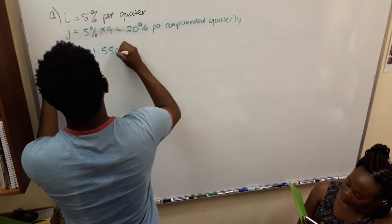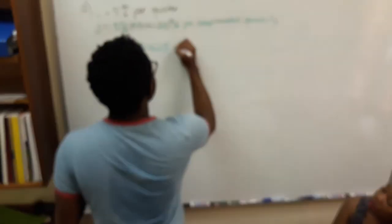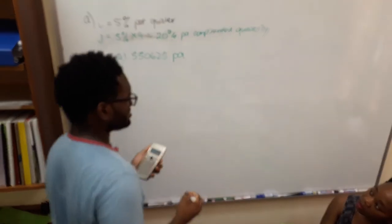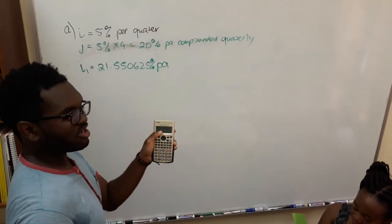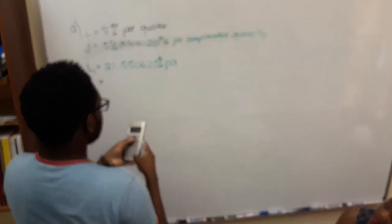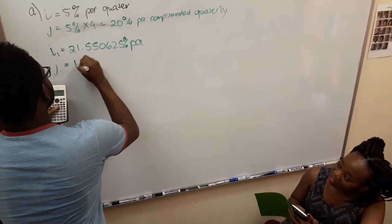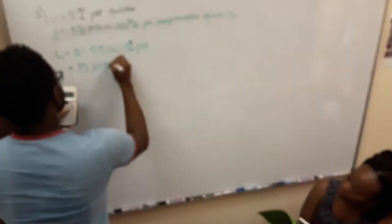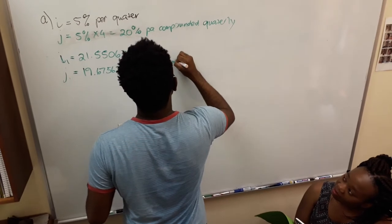21.550625% per annum compounded quarterly.